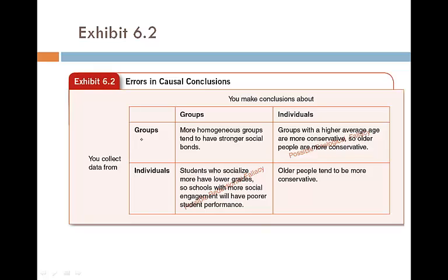For example, if you look at group data and apply it at the group level, we are doing good — for instance, more homogeneous groups tend to have stronger social bonds. That's group data for group conclusions, which is excellent. But if we take group data and apply it to the individual level, we are committing an ecological fallacy. For example, concluding that because groups with a higher average age are more conservative, therefore older people are more conservative — we are not making a valid causal conclusion.